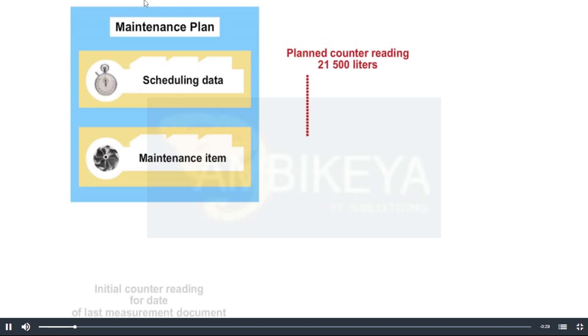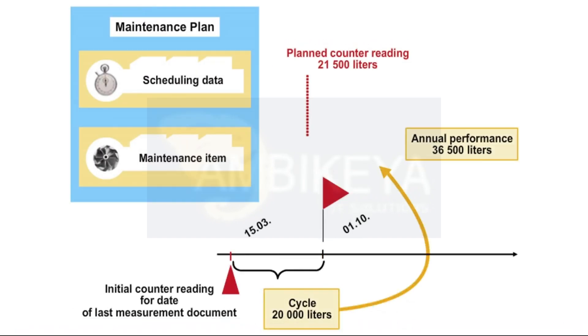The scheduling of performance-based maintenance plans is based on the estimated annual performance entered in the reference object counter. The daily performance is then calculated from the estimated annual performance. A time period is then calculated from the daily performance and maintenance cycle.